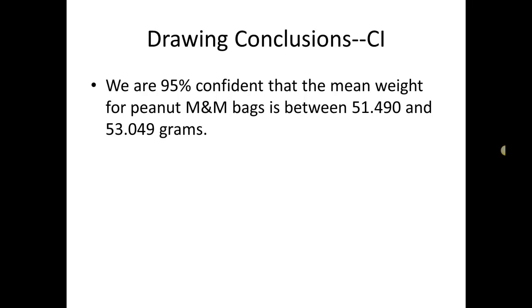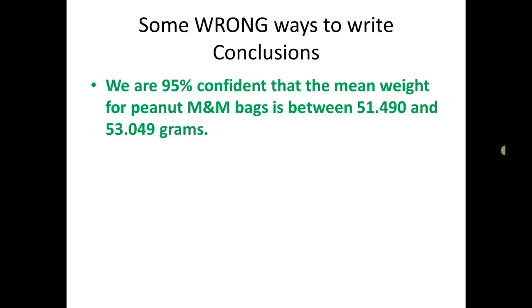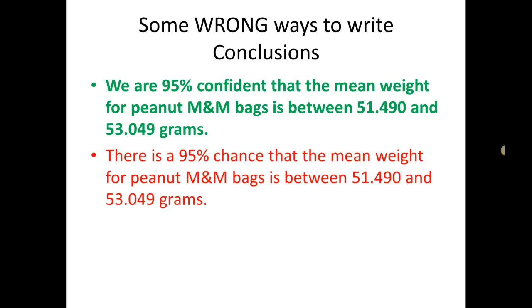Now there's lots of ways to incorrectly write conclusions, so I'm just going to show you some of the pitfalls to avoid when writing a conclusion for your confidence interval. So this is the correct way that we just talked about: we're 95% confident that the mean weight for peanut M&M bags is between 51.490 and 53.049. Now I'm going to show you some incorrect ways.